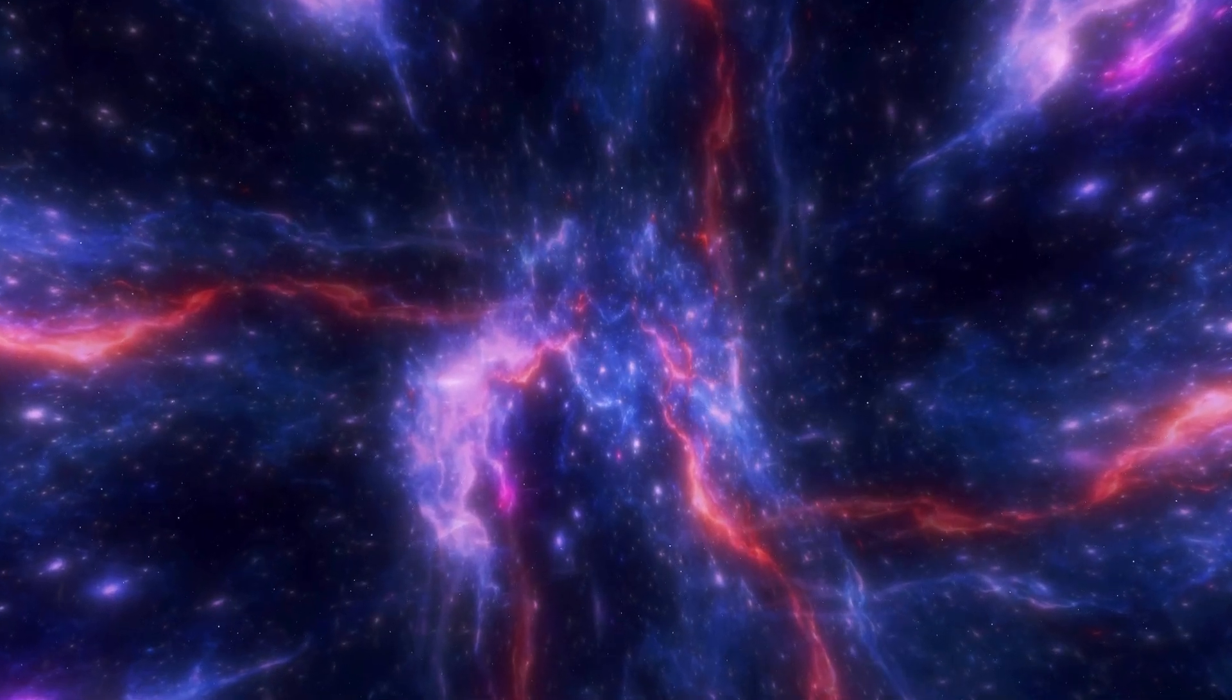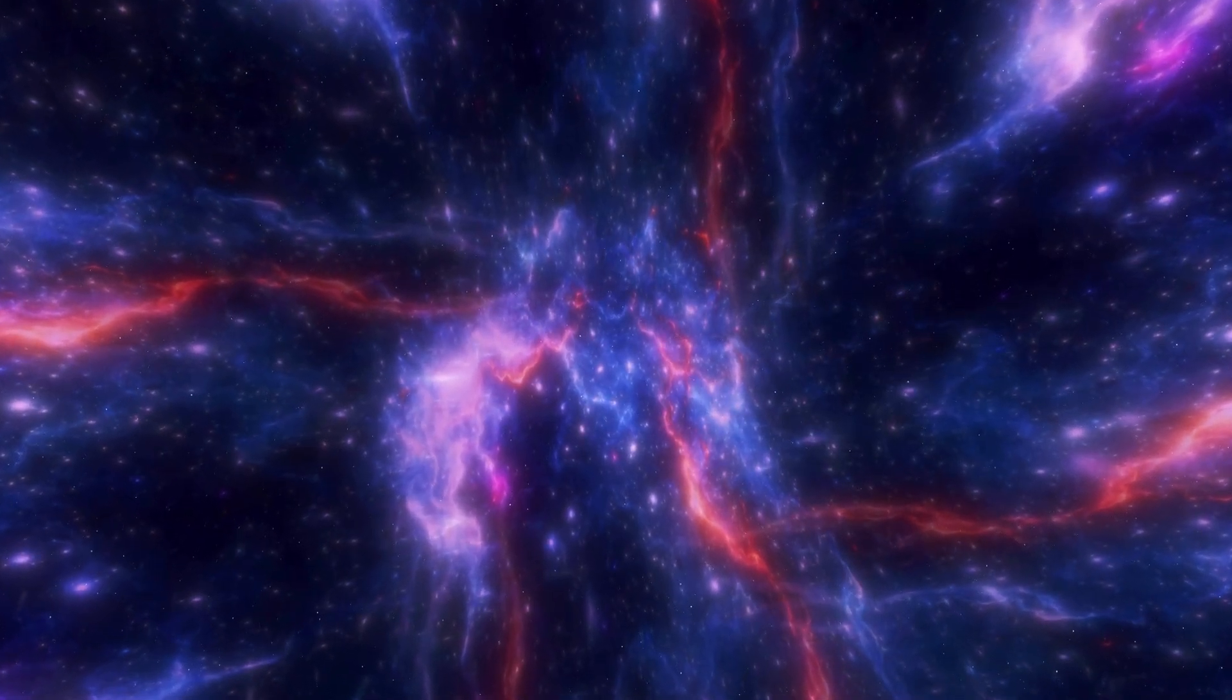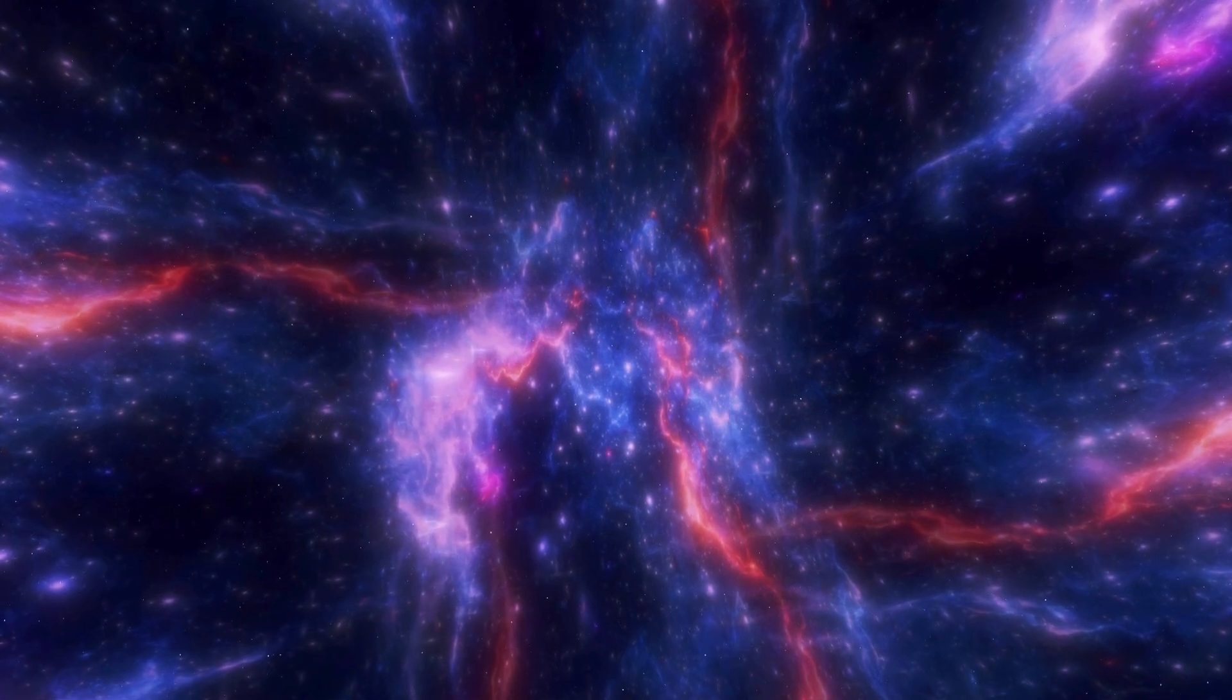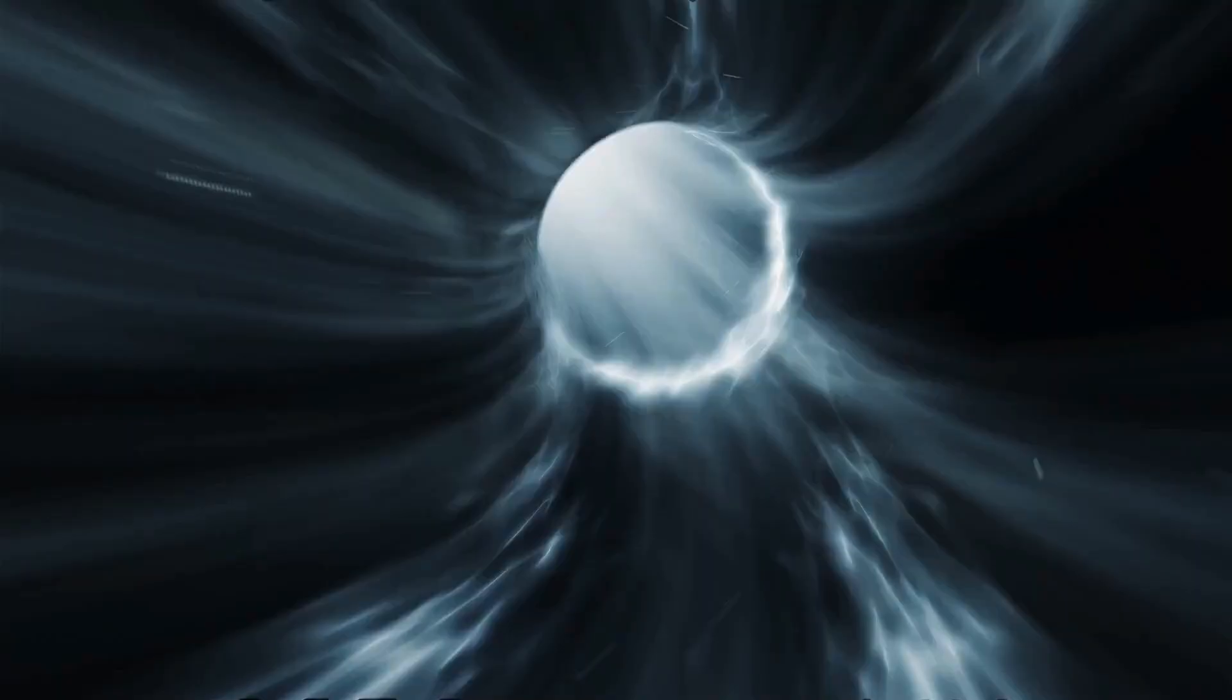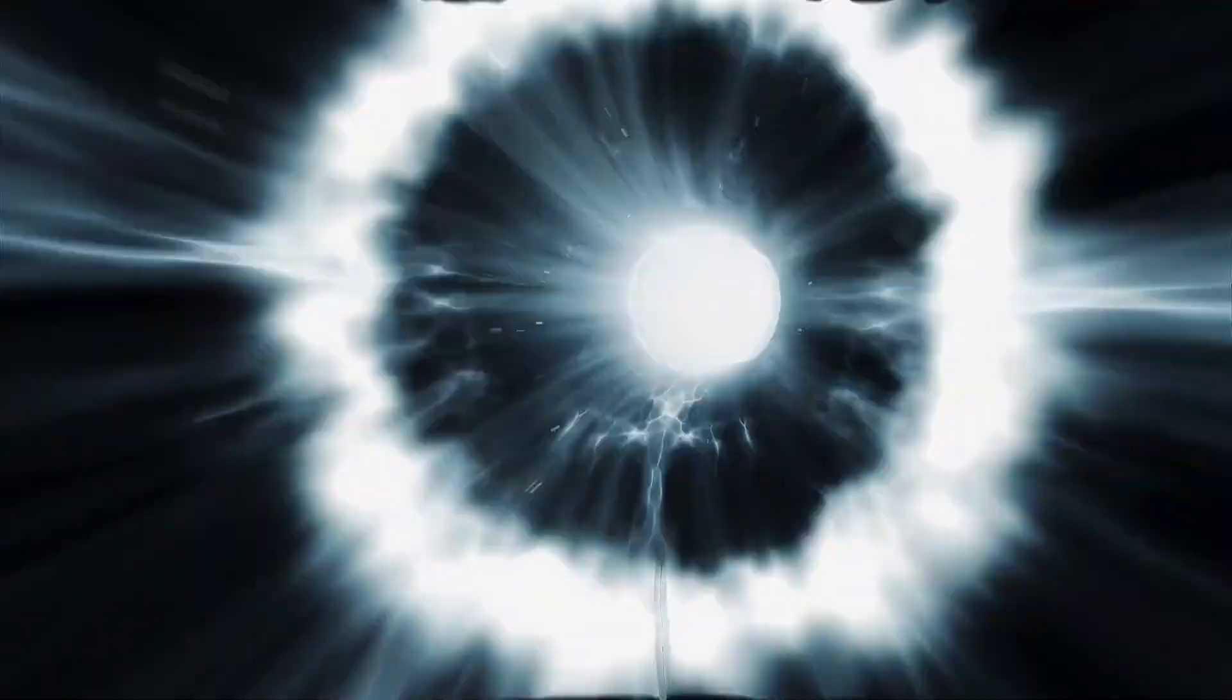As a red supergiant, Betelgeuse is in its declining years, expanding and cooling down after a lifetime of burning hydrogen into helium in its core. At around 8 to 8.5 million years old, Betelgeuse might seem young by human standards, but in the world of stars it's ancient. Born from the fiery remnants of a stellar nursery, it emerged as a hot, luminous blue star radiating intense energy.